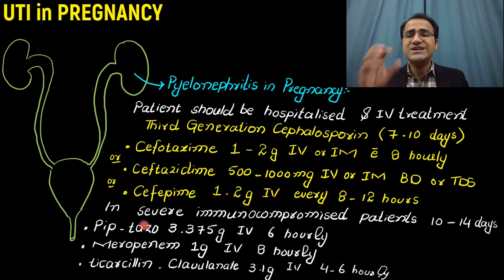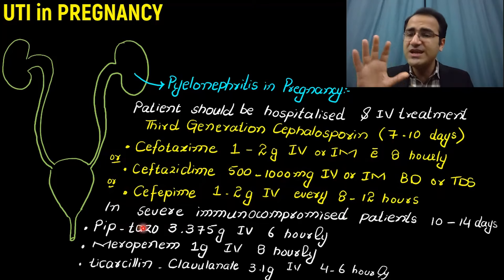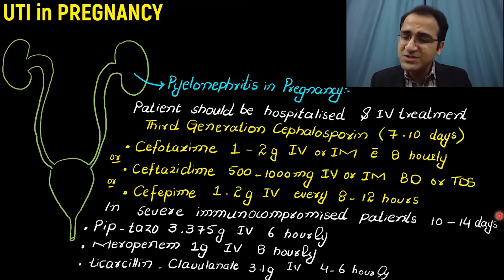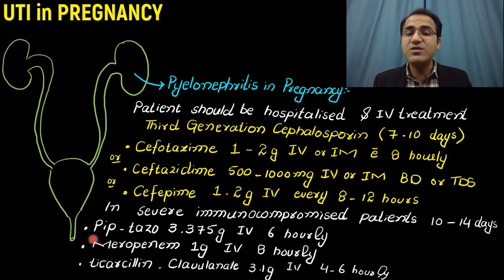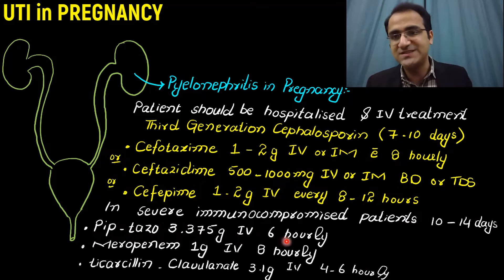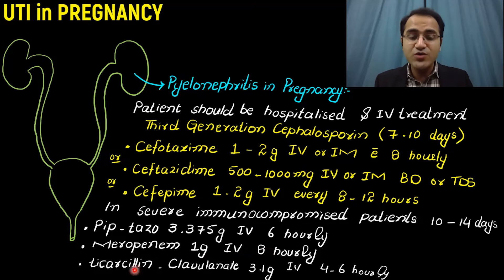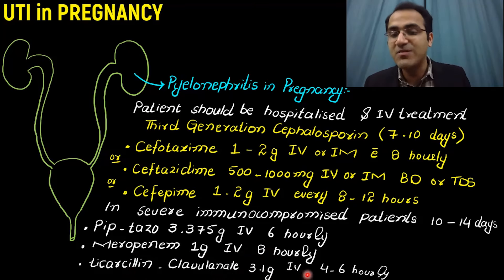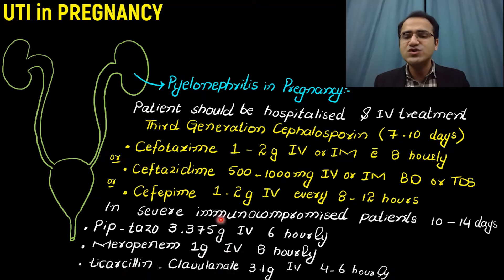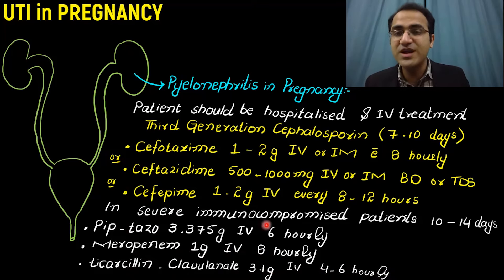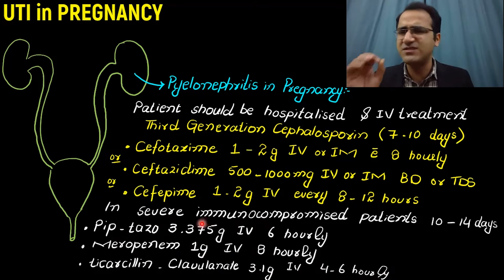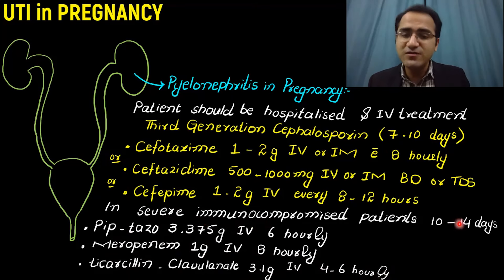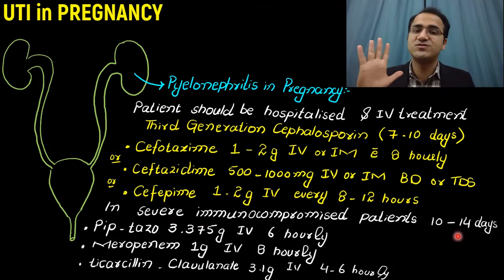If the patient has severe infection or is severely immunocompromised, the patient must be treated for 10 to 14 days in hospital. Options include piperacillin-tazobactam 3.375 grams IV every 6 hours, meropenem 1 gram IV every 8 hours, or ticarcillin-clavulanate 3.1 grams IV every 6 hours. These regimens are used for severe or immunocompromised patients hospitalized for 10 to 14 days.